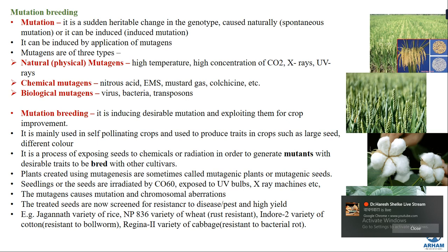There are certain examples of mutation breeding crops grown in India: Jagannath variety of rice; NP 836 variety of wheat, which is rust resistant; Indore 2 variety of cotton, which has resistance to ball worm; and Regina 2 variety of cabbage, which has resistance to bacterial rot. These are crops grown in India as a result of mutation breeding.